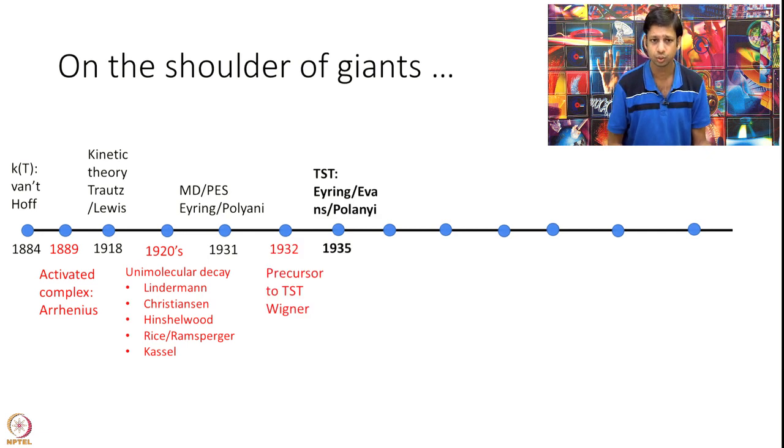1931 and 32 and 35 saw some very important works. 1931, the idea of doing dynamics occurred by Eyring and Polanyi. Building on that idea, 1932 Wigner gave a theory which is the precursor to TST.